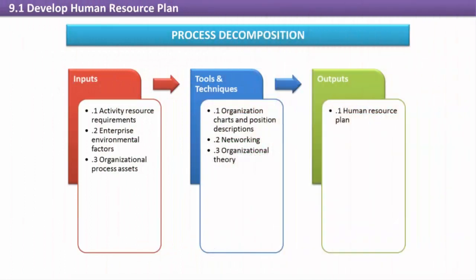The Develop Human Resource Plan process determines how the project will be staffed and how the project team will be trained and managed. This process establishes roles, reporting relationships, responsibilities, training plans, and the staffing management plan, which is a component of the project management plan.